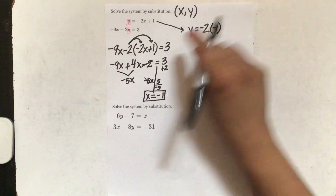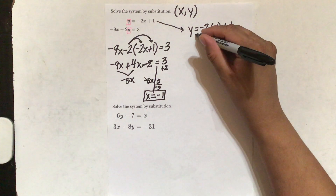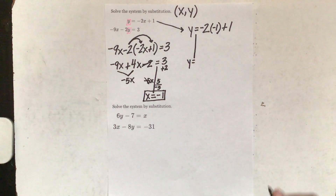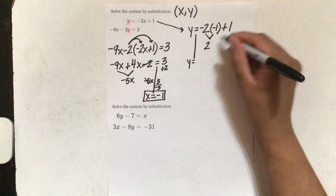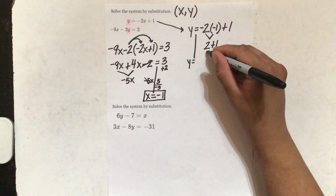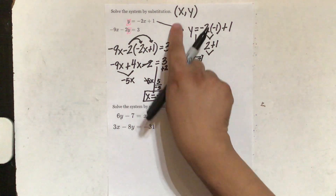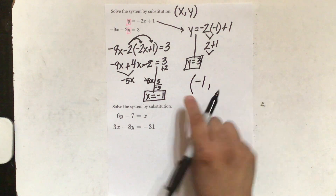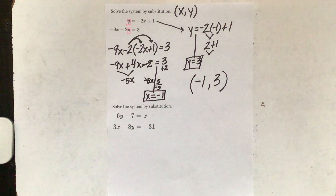And then close it out, plus 1. I'm going to draw my line of separation. My goal is to get y by itself, which it already is — perfect. So I'm going to multiply: negative 2 times negative 1. Negative times negative is a positive, 2 times 1 is 2. And then plus 1 comes down. 2 plus 1 is equal to 3. So y equals 3. I needed x and y — I have x and y. My x is negative 1, my y is 3. There you go, that's how we do it.